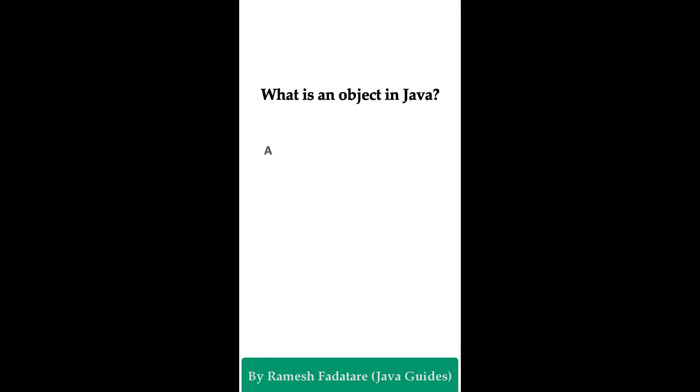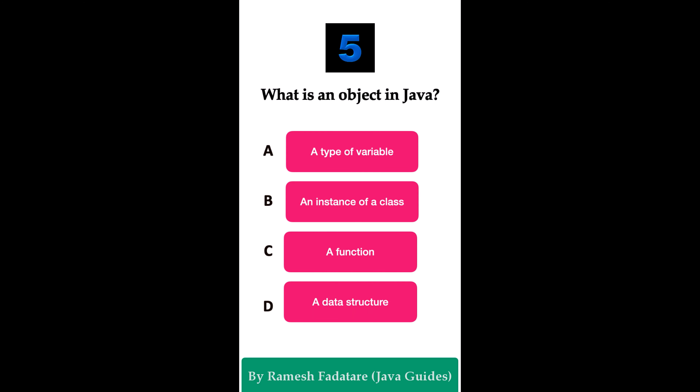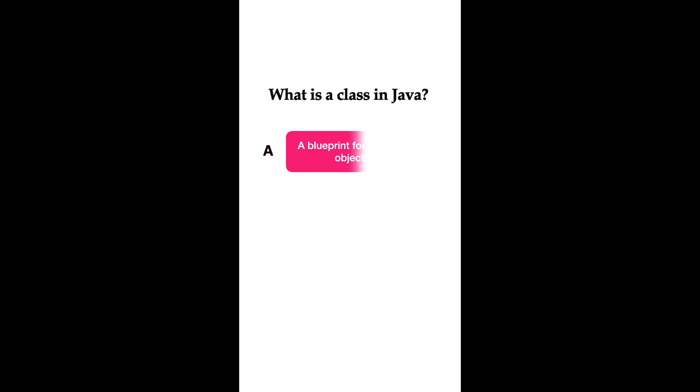What is an object in Java? Option A: a type of variable. Option B: an instance of a class. Option C: a function. Option D: a data structure. The correct answer is option B — an object is an instance of a class. A class is a blueprint or template for creating objects. We typically create an object using the new keyword. Each object contains its own state and behavior and represents real-world entities by holding specific values and performing actions.